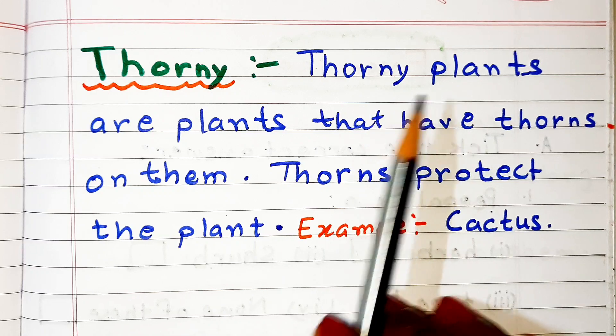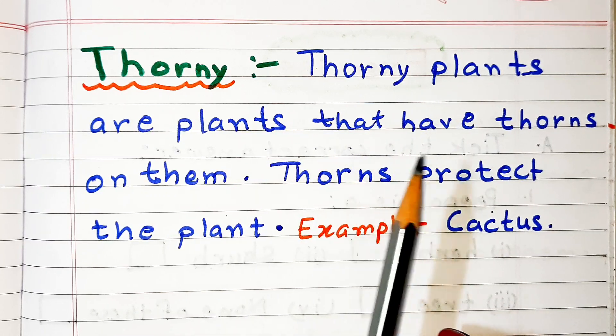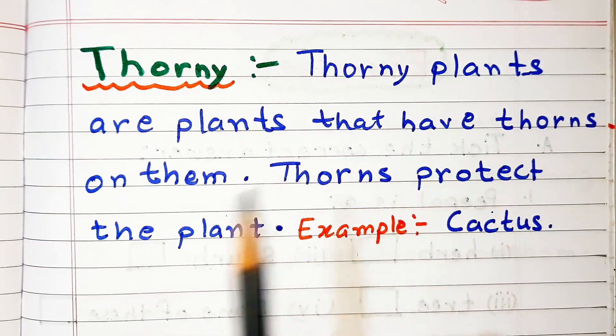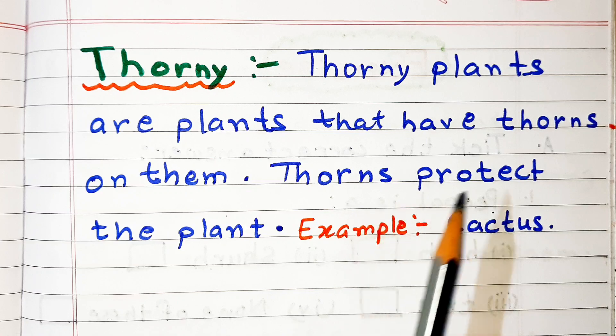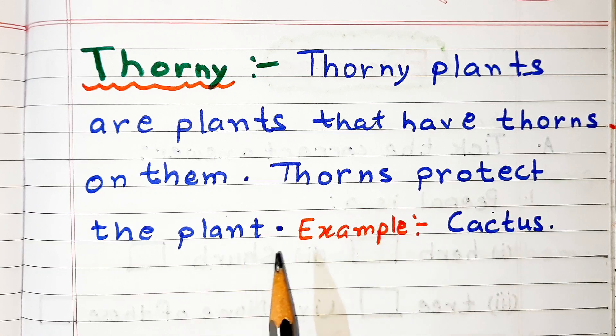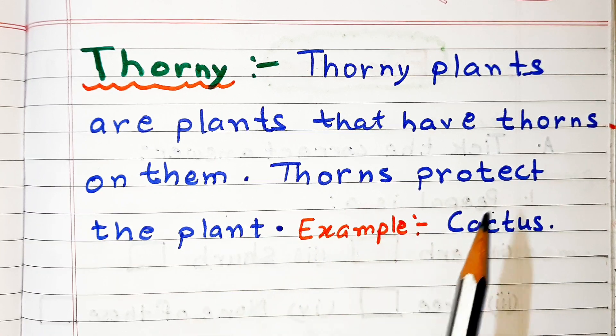Thorny plants are plants that have thorns on them. Thorns protect the plant. Example: cactus, etc.